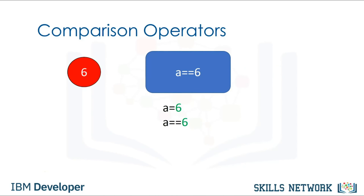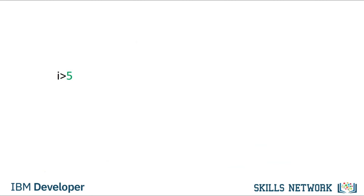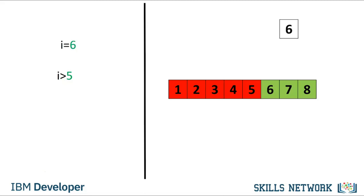Consider the equality comparison operator: if the value of the left operand i is greater than the value of the right operand 5, the condition becomes true, or else we get false. Values greater than 5 are shown in green and the rest in red. If we set i equal to 6, we see that 6 is larger than 5 and as a result we get true. We can also apply the same operations to floats.